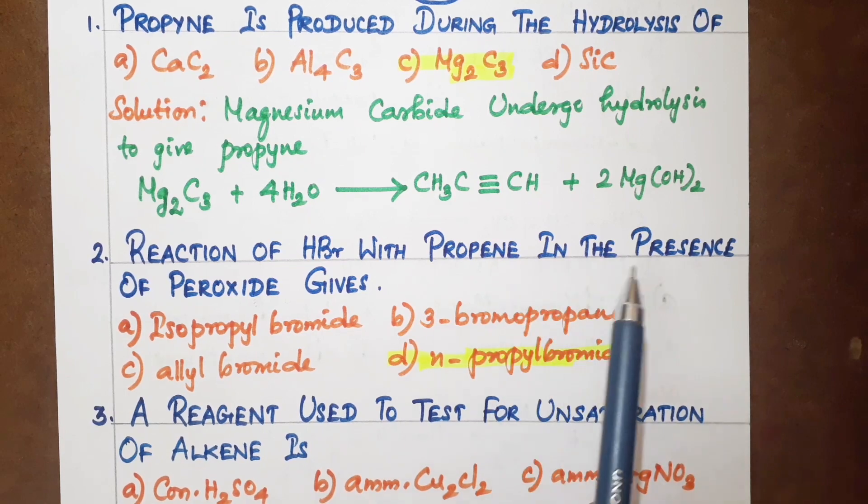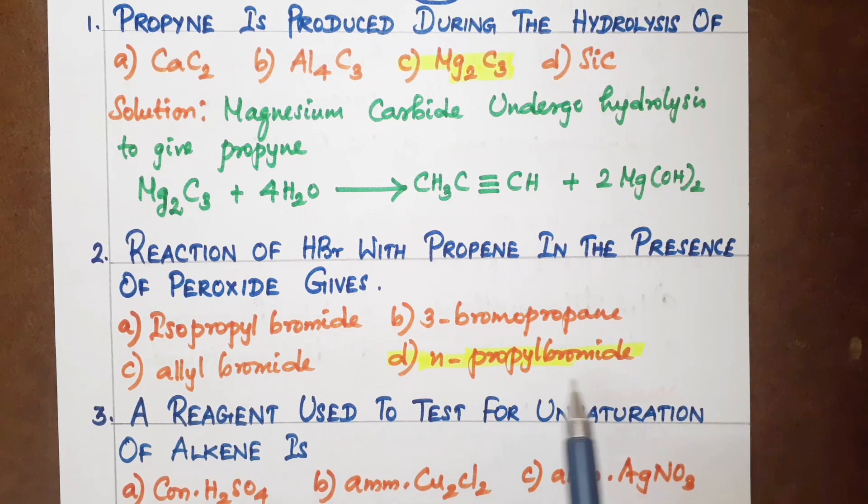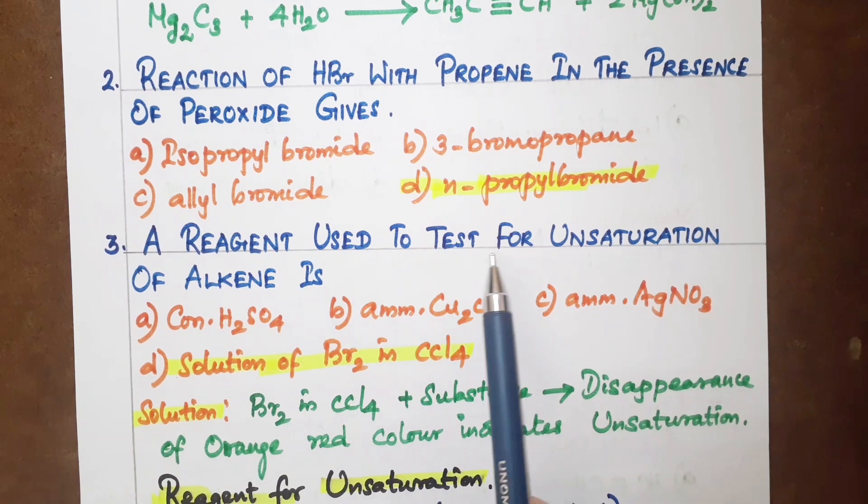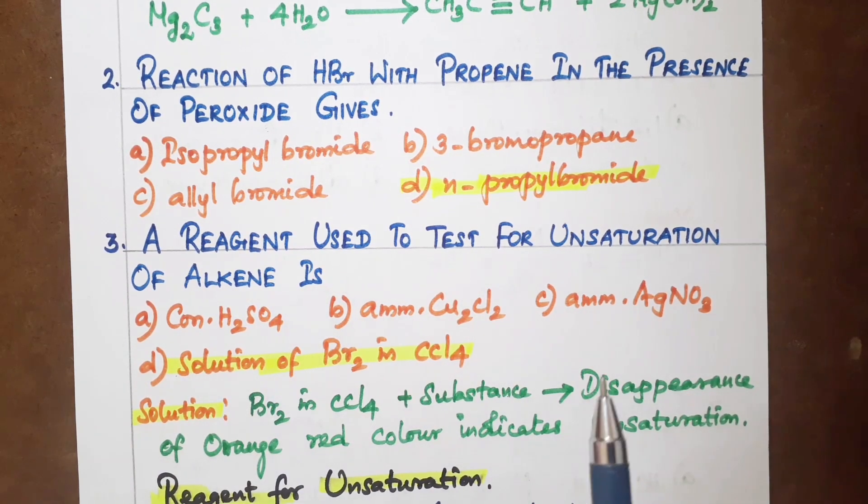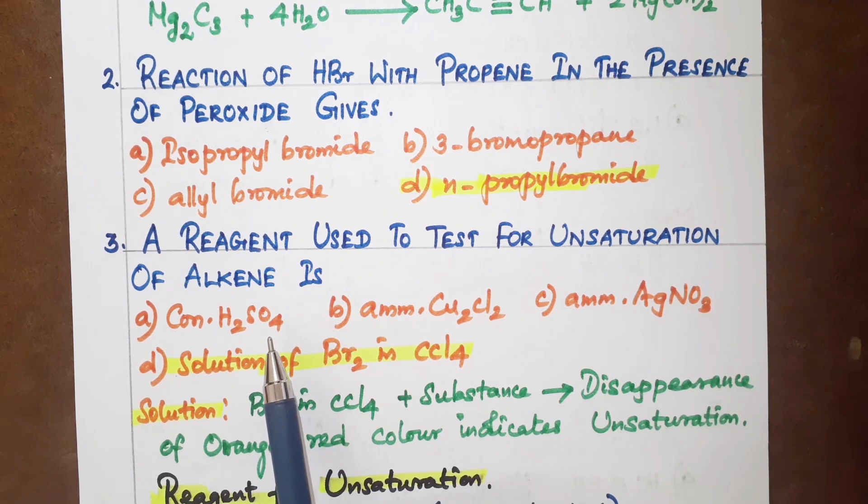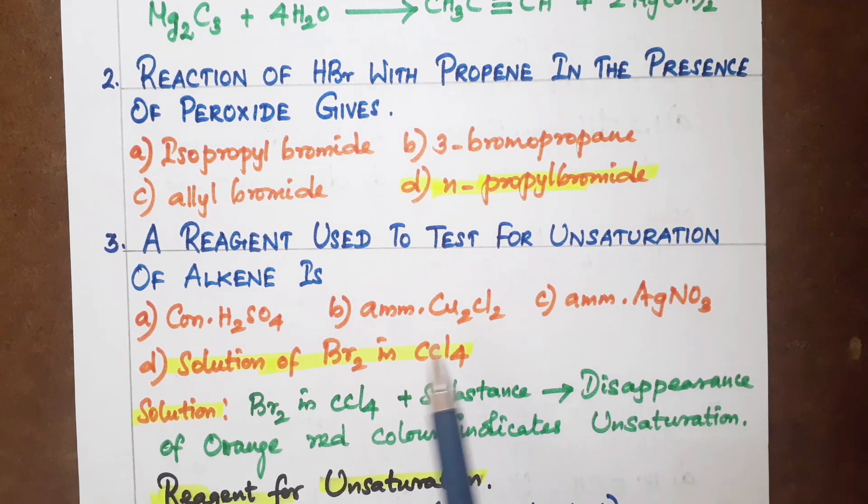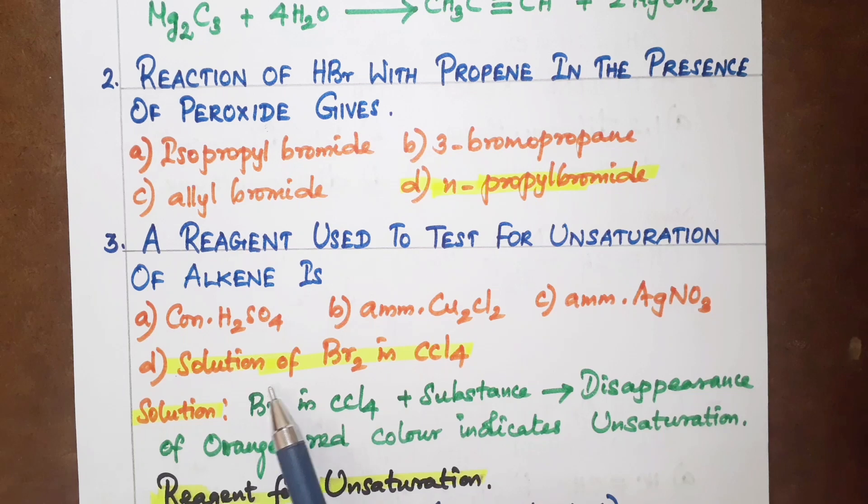Third question: A reagent used to test for unsaturation of alkenes. The options are: concentrated sulfuric acid, ammonium cuprous chloride, ammoniacal silver nitrate, and solution of bromine in carbon tetrachloride.